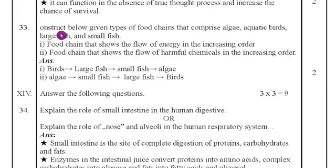Number 33. Construct below given types of the food chain that comprises algae, aquatic birds, large fish and small fish. Food chain that shows the flow of energy in the increasing order. Second one. Food chain that shows the flow of harmful chemicals in the increasing order. The first one option is bird, large fish, small fish and algae. Then the second answer is algae, small fish, large fish and birds.